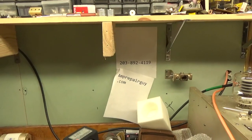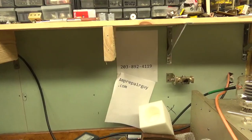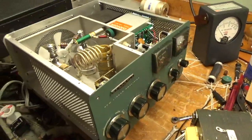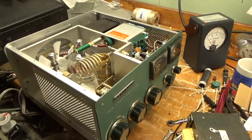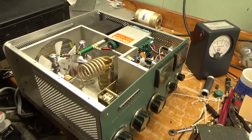A guy sent me a Heathkit SB220 - there's my website and phone number. It had lots and lots of issues. Transformer had been removed, the plate transformer. Chassis was all bent up. He got it from someone. The transformer had already been removed at that point. Didn't know the history.